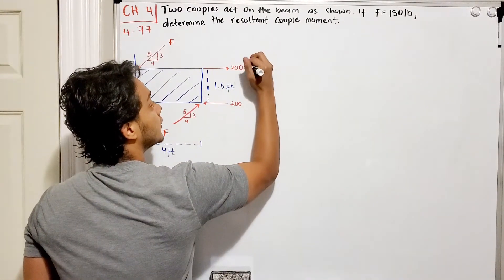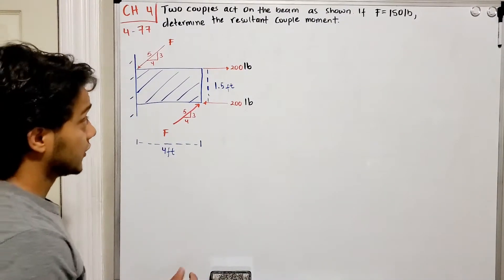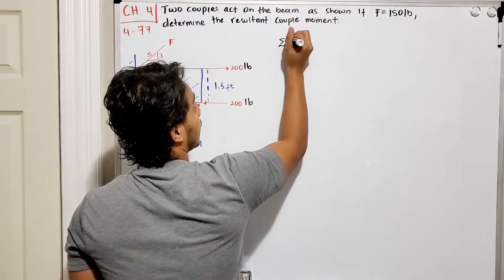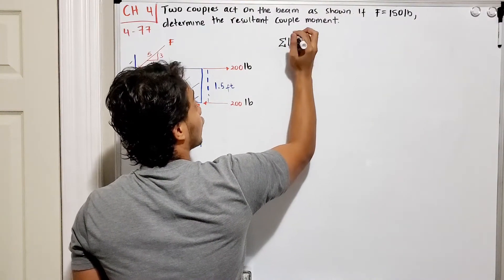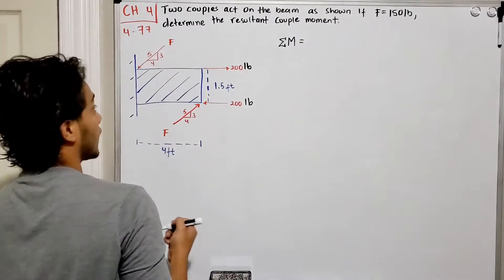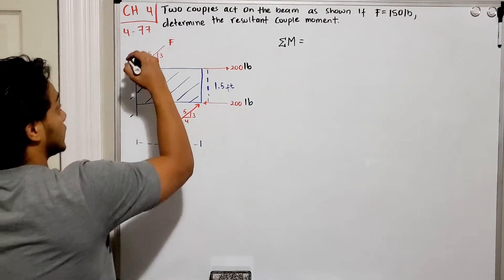These are pound forces we need to label. They want to determine the moment so we're gonna do our summation of moments for this beam. I'm gonna start with F.